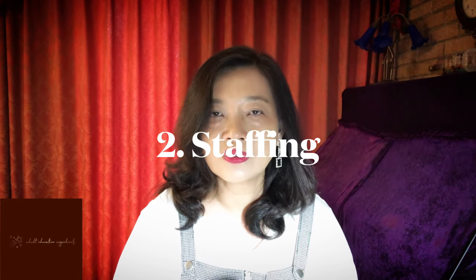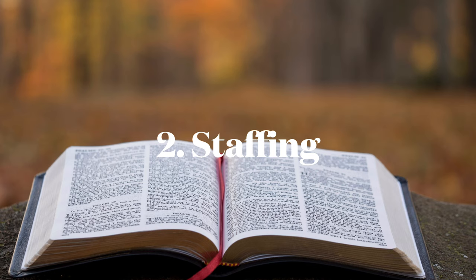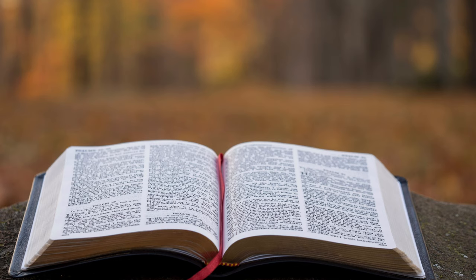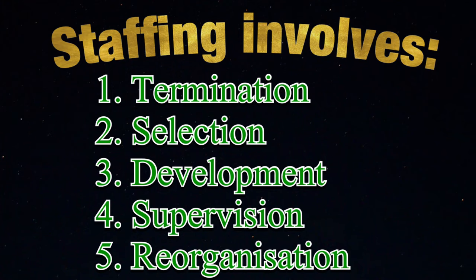The next strategy is staffing. Knox has a quote about staffing. He said, 'Staffing decisions are among the most influential on results because the people who work for an agency affect the process of making most of the decisions.' Staffing involves termination, selection, development, supervision, and reorganization.